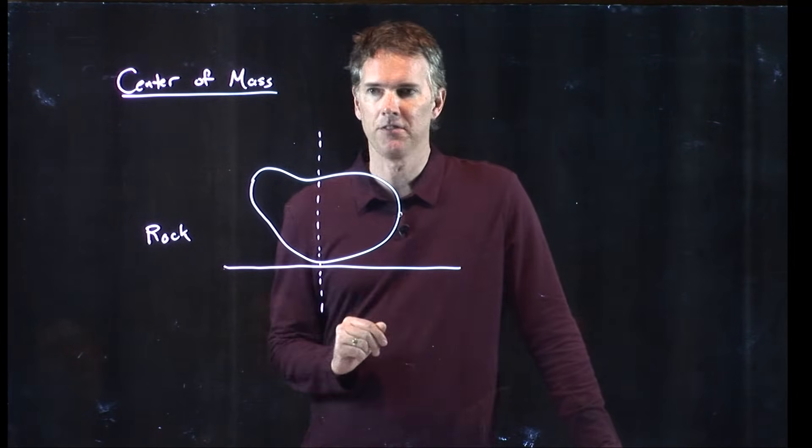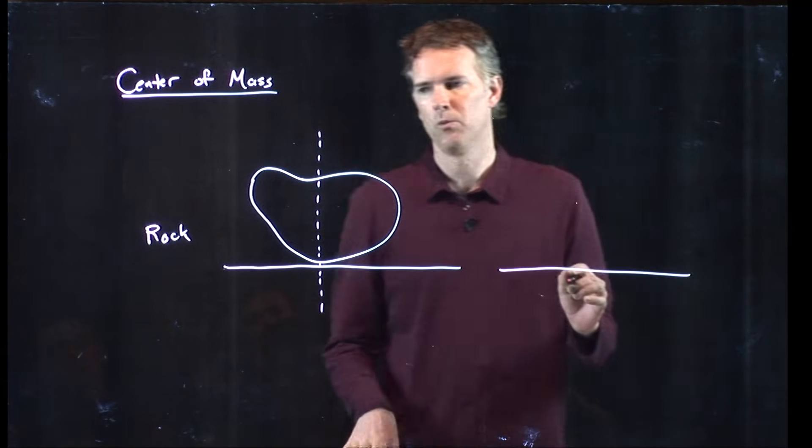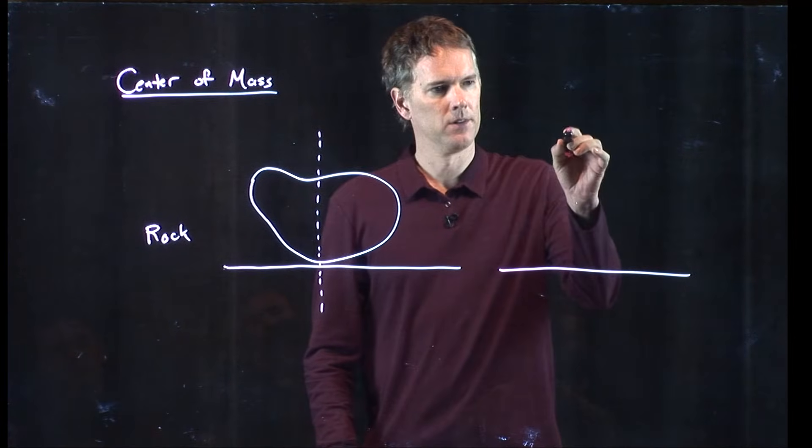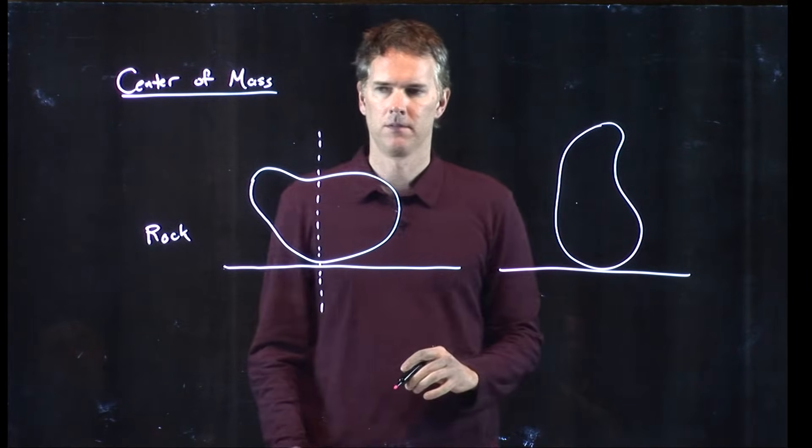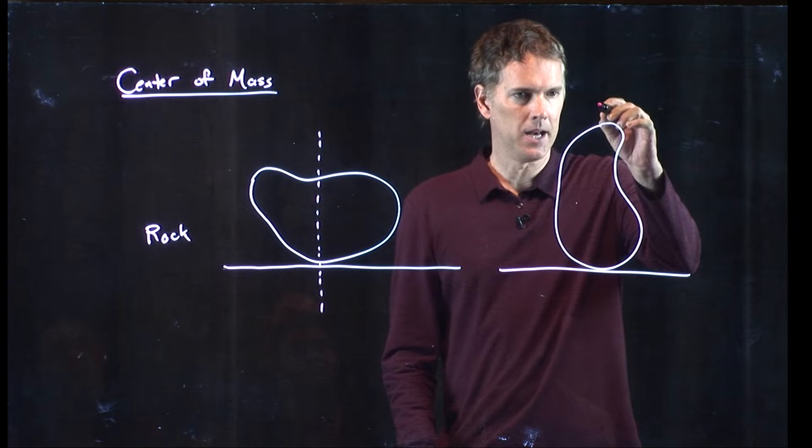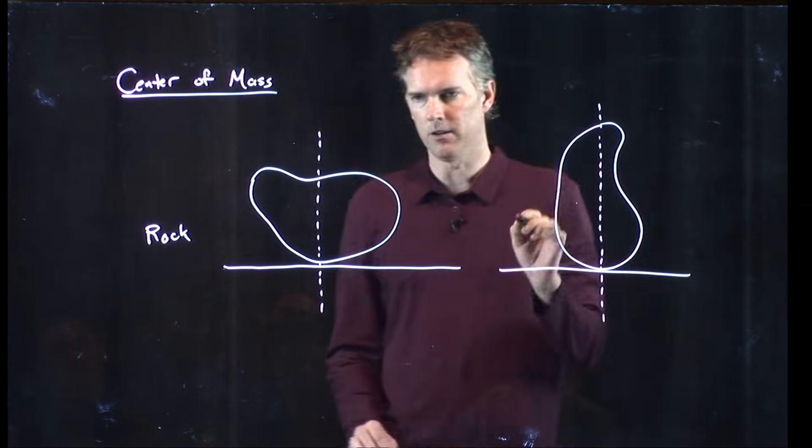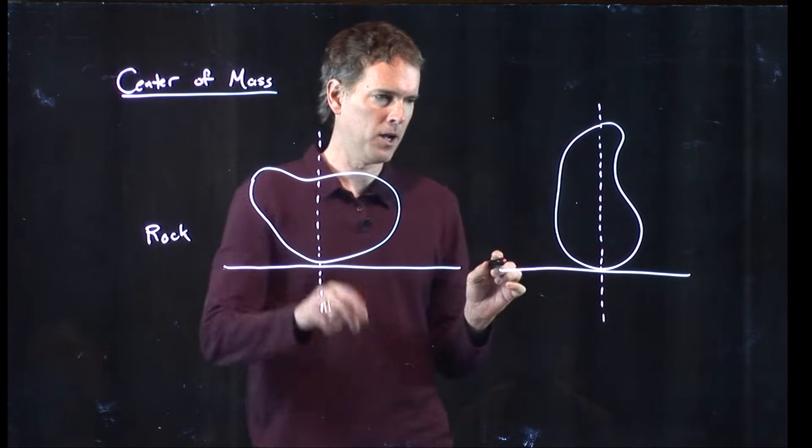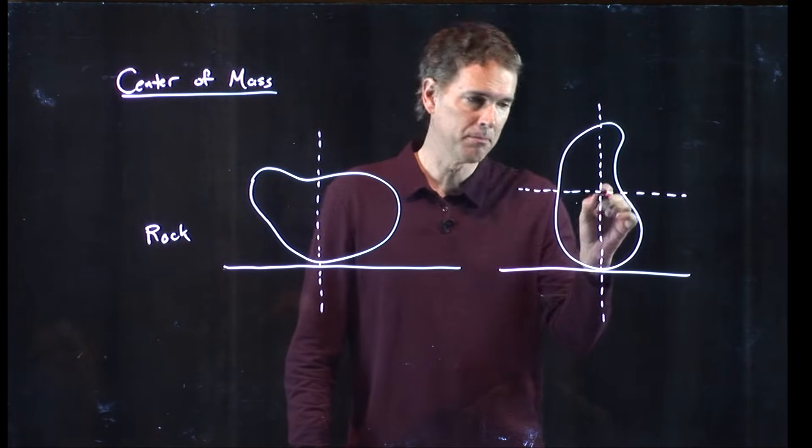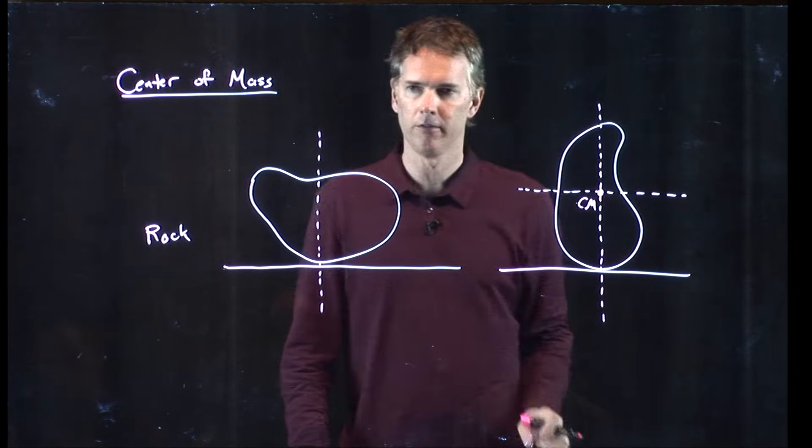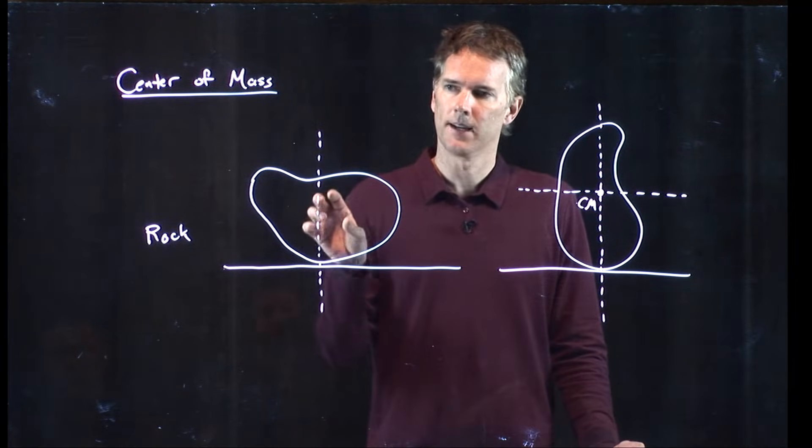And the center of mass has to lie along that line. And now let's do it again. We'll take the rock and we'll rotate it until it's standing up on one edge. And so it's going to look something like this. I've taken my rock and I've rotated it up. And now there's a new line that goes straight through that interception point. And I can redraw my old line on this new picture. And wherever those two lines meet, that is the center of mass. That's how you figure out the center of mass of some complicated object like a rock.